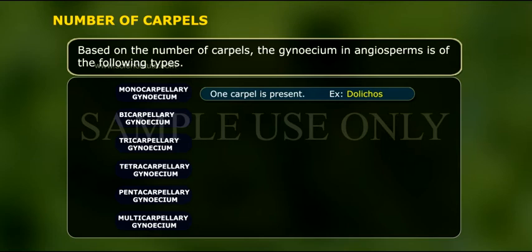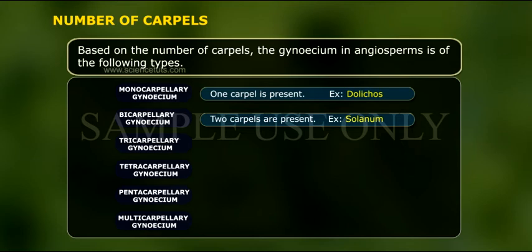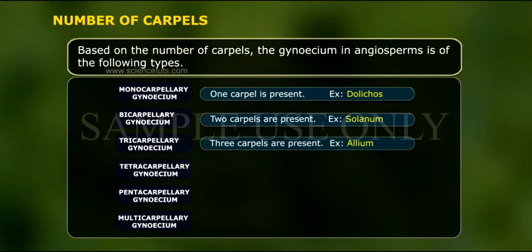Bicarpillary gynoecium: two carpels are present. Example: Solanum. Tricarpillary gynoecium: three carpels are present.